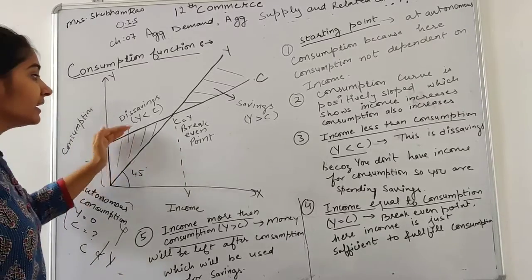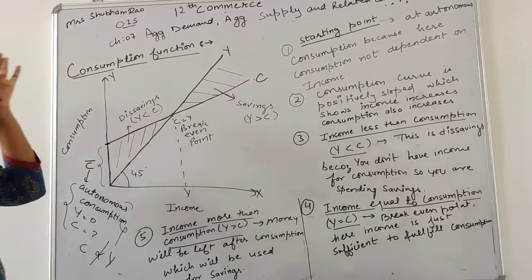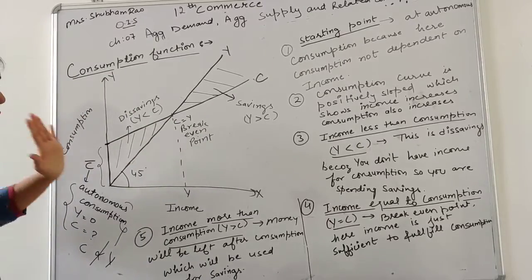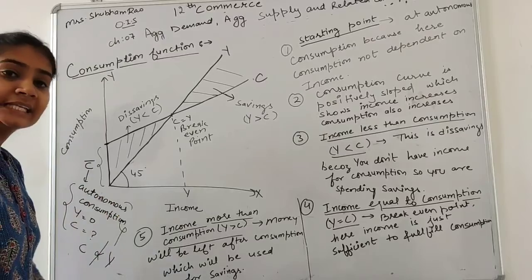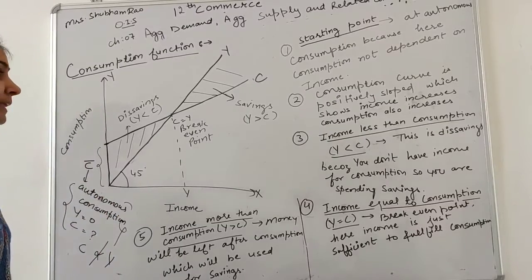What is that? There is a direct relation, a positive relation. The consumption goes up positively sloped. Why? Because as income increases consumption, our consumption goes up.